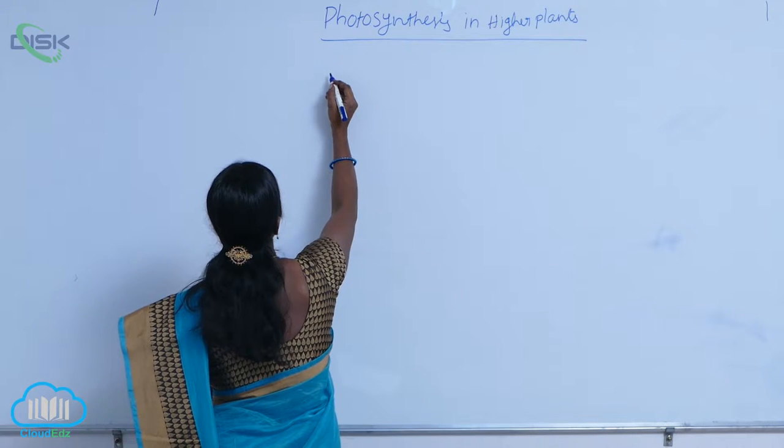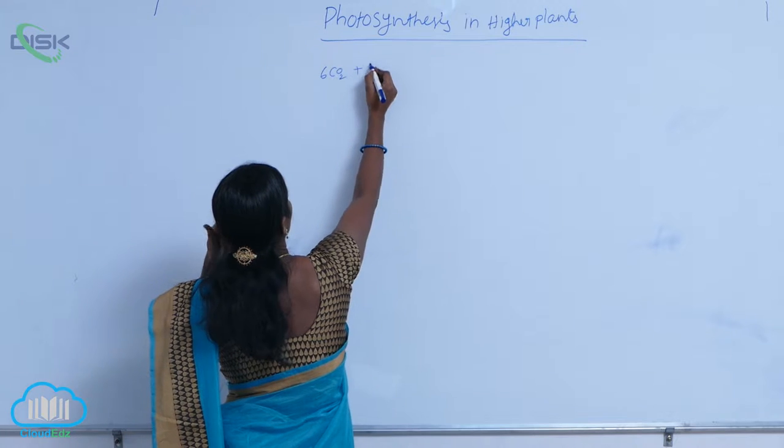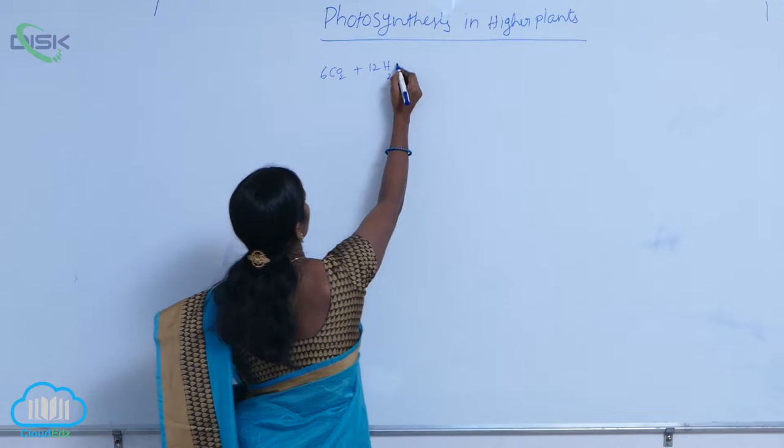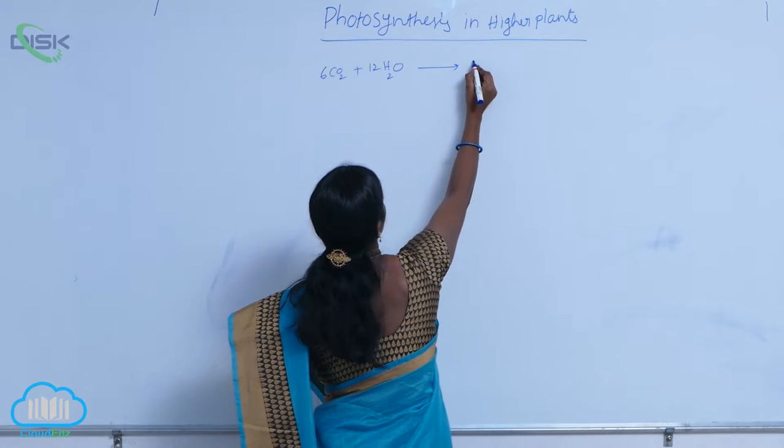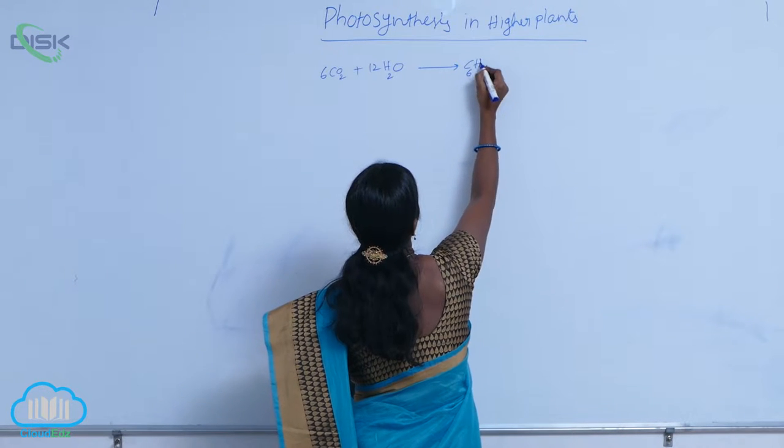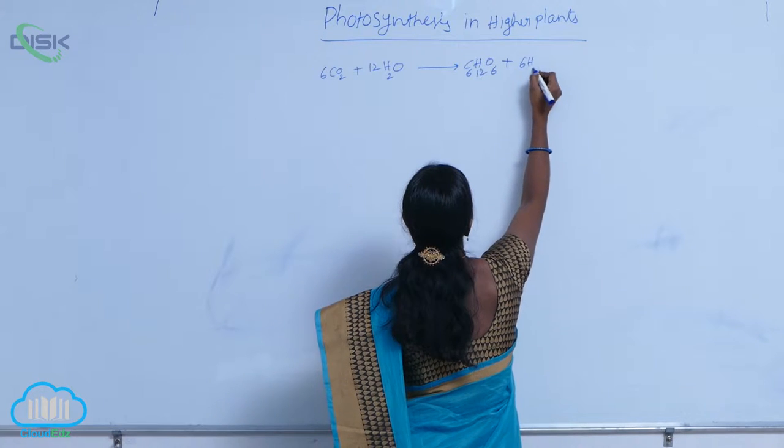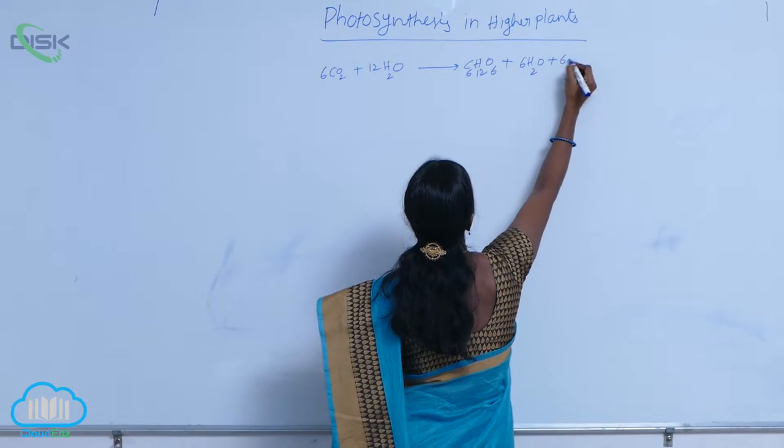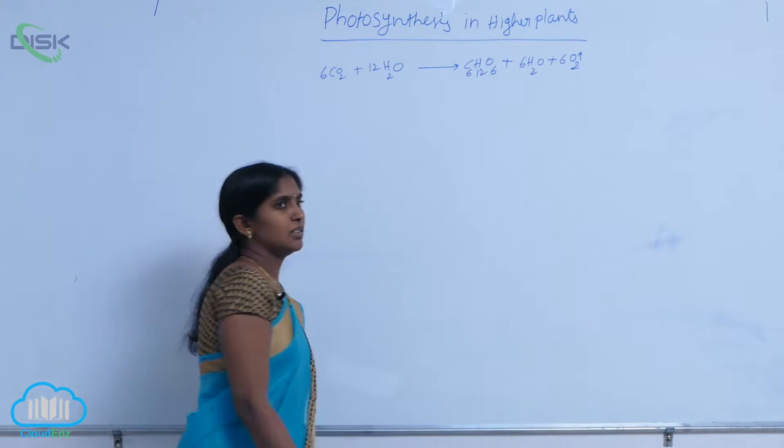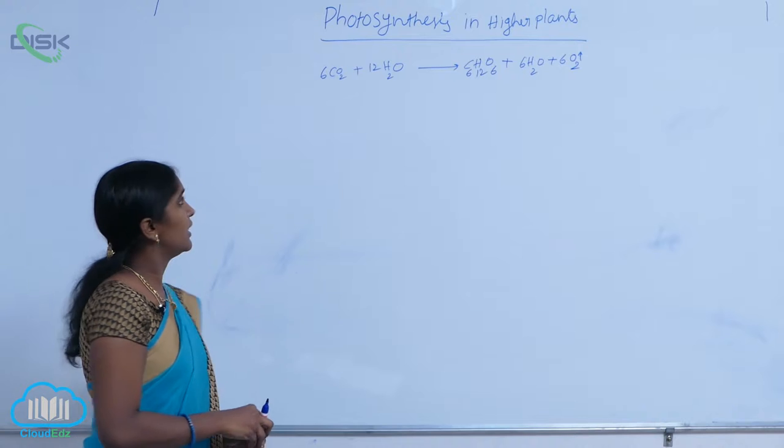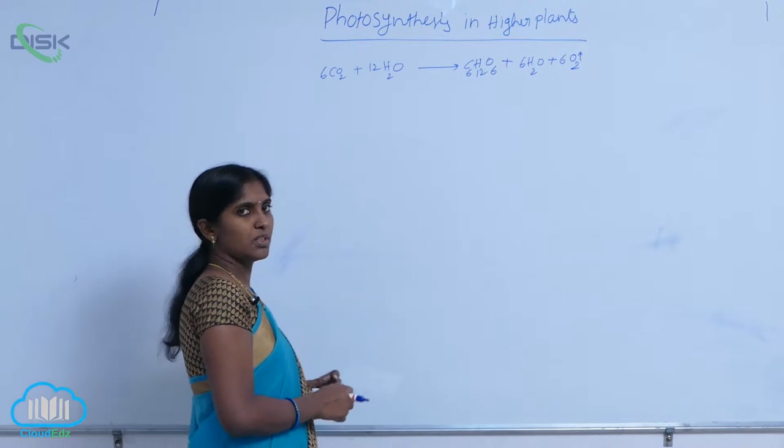The equation of photosynthesis is 6CO2 plus 12H2O gives rise to carbohydrates C6H12O6 plus 6H2O plus 6O2. This is the reaction conducted in photosynthesis, this is the equation of photosynthesis.